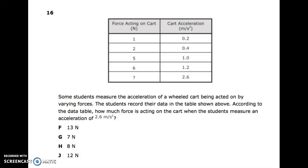You have a table with forces acting on a cart and cart acceleration. Some students measure the acceleration of a wheeled cart being acted on by varying forces and record their data. According to the data table, how much force is acting on the cart when the students measure an acceleration of 2.6 meters per second squared? F: 13 newtons. G: 7 newtons. H: 8 newtons. J: 12 newtons.